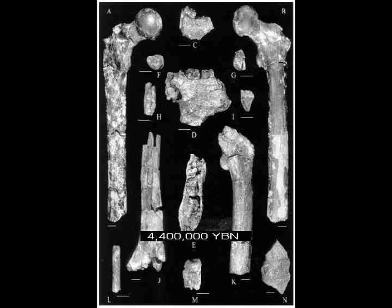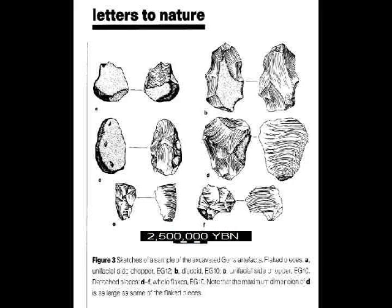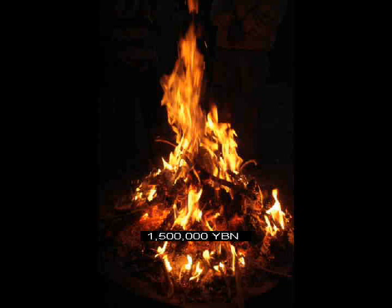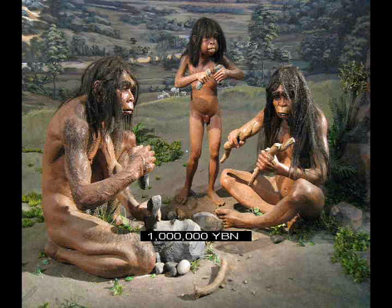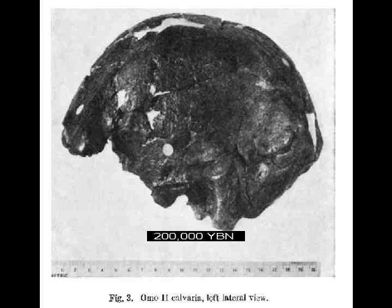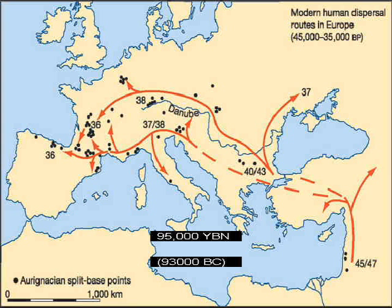Ardipithecus: earliest hominid. Primates walk. Homo habilis. The human brain starts getting bigger. Stone tools. Homo erectus. Homo erectus moves into Eurasia. Controlled use of fire. Erectus evolves less body hair. Spear. Humans. Homo sapiens. The 30 sounds of human language. Sapiens move into Eurasia.